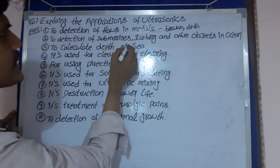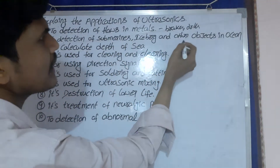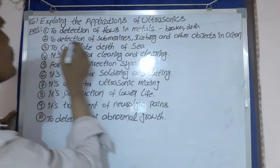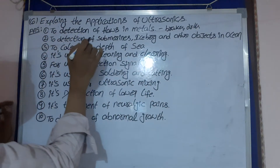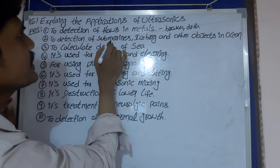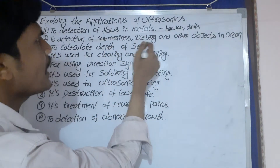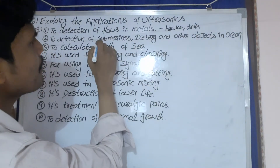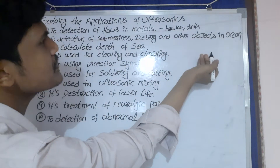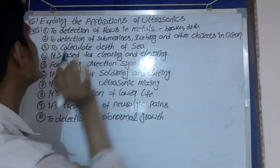Next one: detection of submarines, icebergs, and other objects in the ocean. The distance between submarines, icebergs, or other objects is calculated using ultrasonic waves.